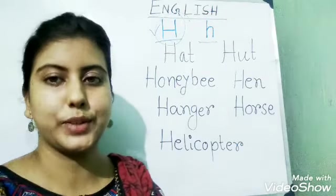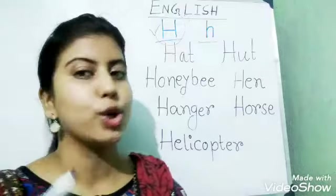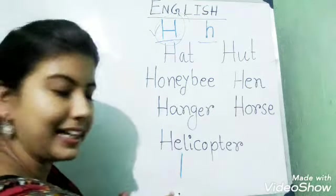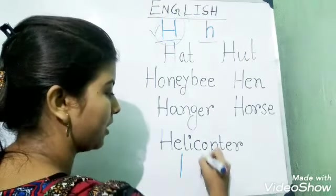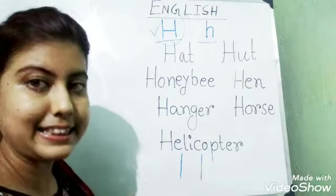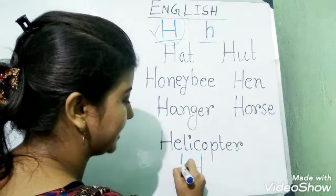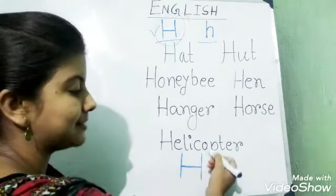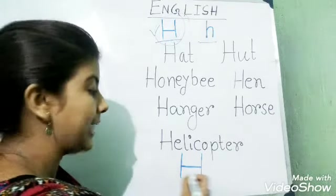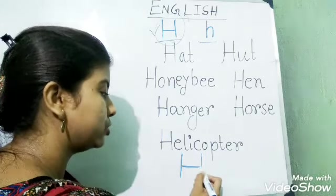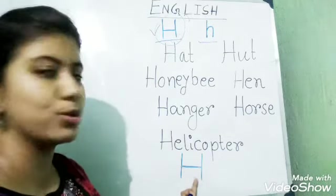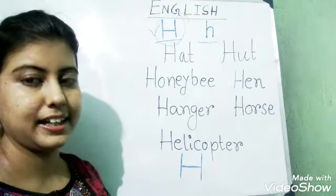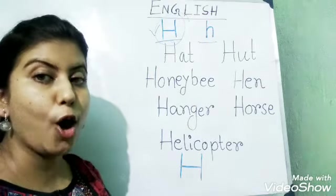I am going to write capital H first. First I will draw a straight line, and then I will draw another straight line, and then I will join that. First straight line, second straight line, and then I have to join these two lines. That will make capital H. And now small h.